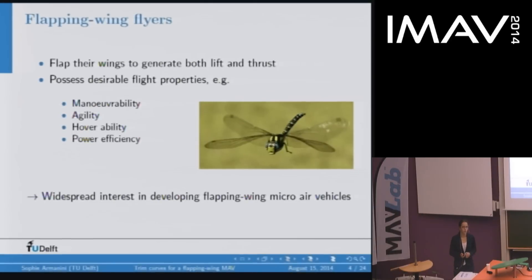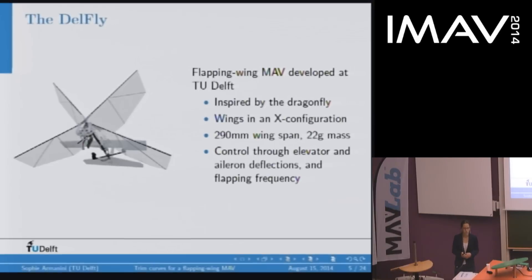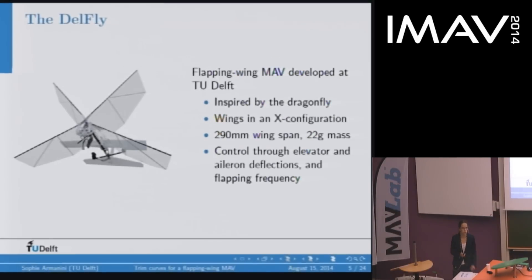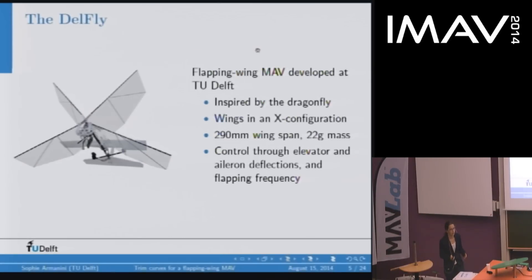Sometimes they can even fly backwards. Due to all of these favorable properties, there is currently widespread interest in developing flapping wing MAVs. At TU Delft, this research has led to the development of the DelFly. It is modeled on a dragonfly and its wings are arranged in an X configuration. Several different types of DelFlies exist, but the one we used has a wingspan of 29 centimeters, weighs about 22 grams, and is controlled by elevator and aileron deflections as well as by flapping frequency.